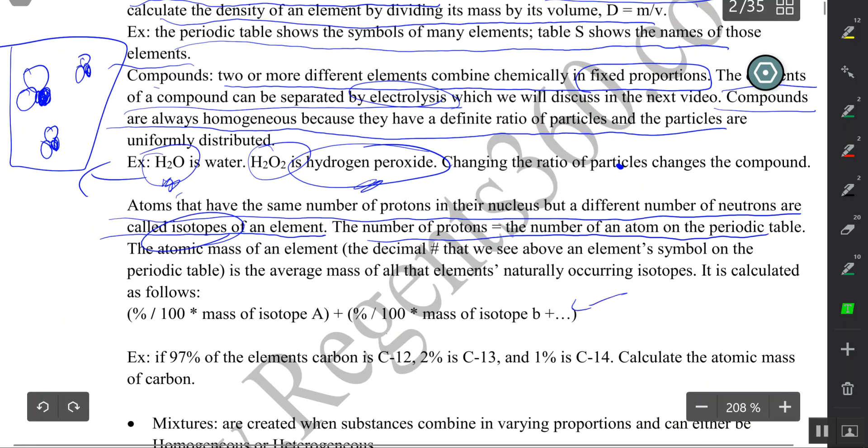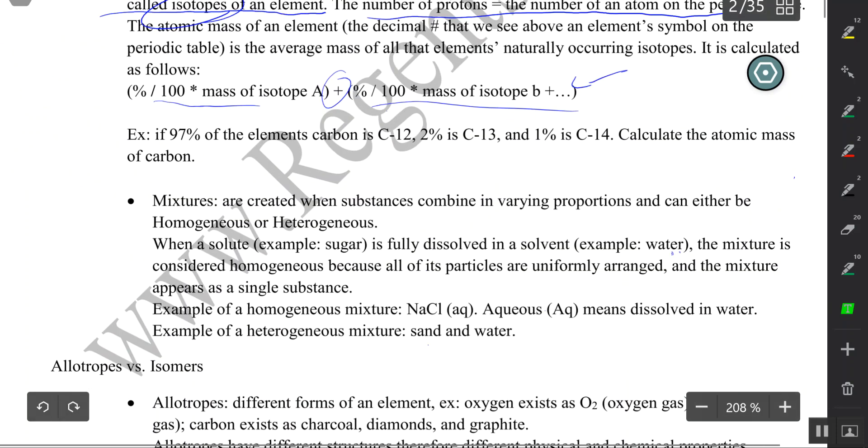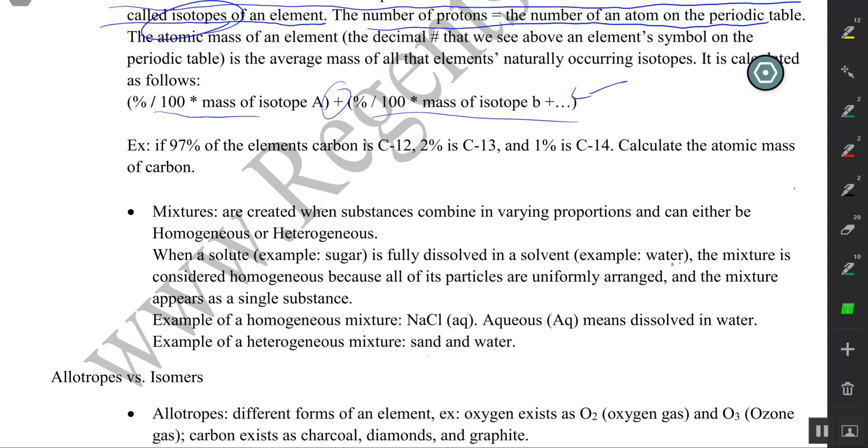How to calculate the atomic mass? Percent over 100 times mass, plus percent over 100 times mass of isotope B, isotope C, isotope D, and so on. Here's an example.